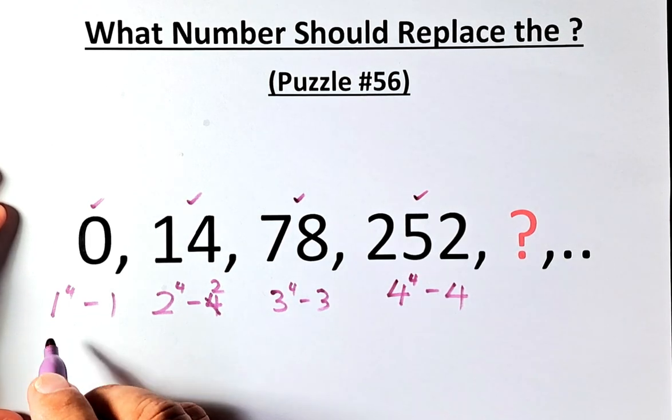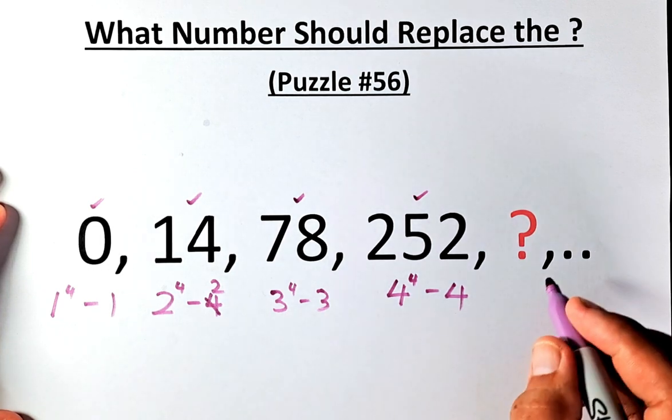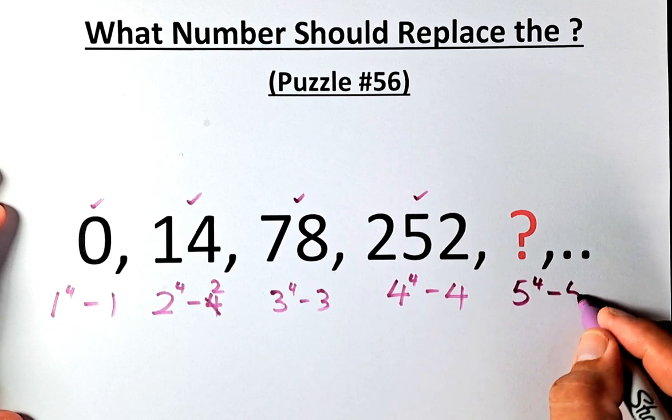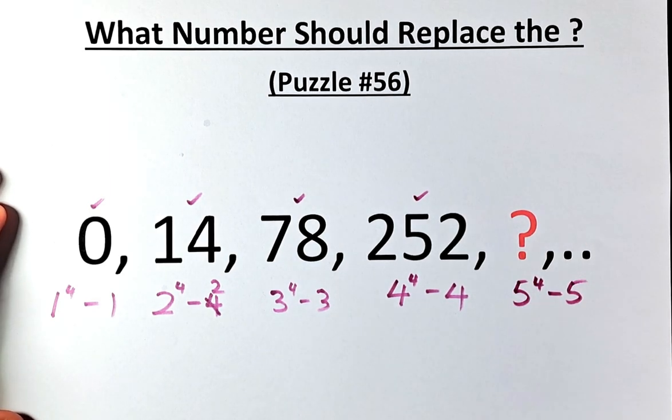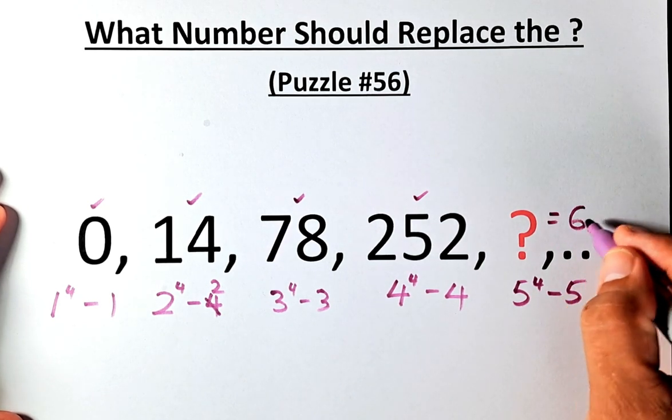And what is the question mark? The question mark of course has to be 1, 2, 3, 4 and each time it's minus 1, 2, 3, 4 is going to be 5 to the power of 4 minus 5. 5 to the power of 4 is 625 minus 5. The question mark is going to be 620.